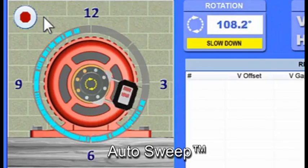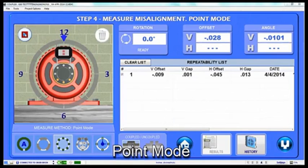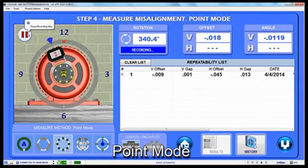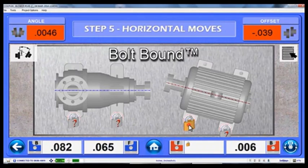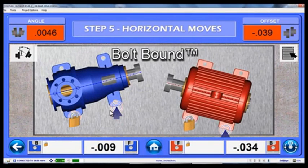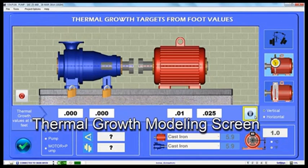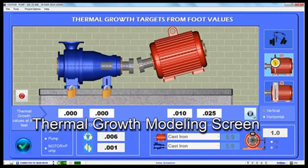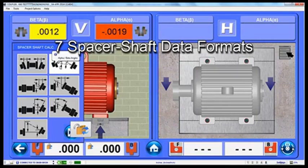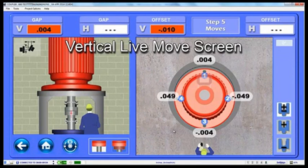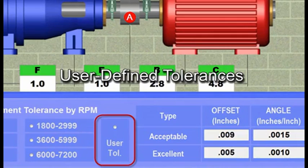such as auto sweep for recording hundreds of data points, point mode, take multiple points at any clock position, bolt bound, lock unlock feet of pump and motor to minimize alignment moves, thermal growth modeling screen and foot growth calculator, repeatability and history table to save up to 25 sets of data, 7 spacer shaft data formats, vertical live move screen, user defined tolerances.